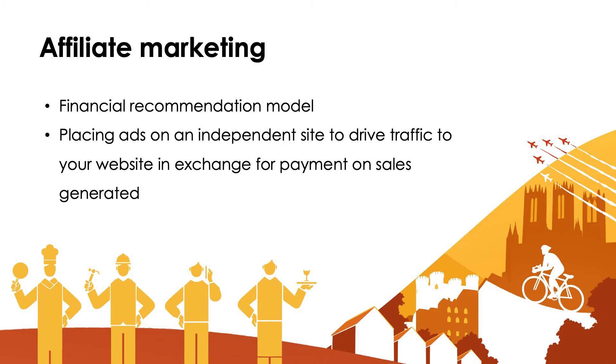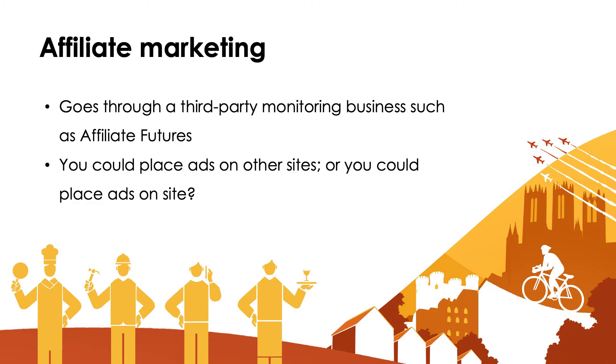Affiliate marketing is basically a financial recommendation model where you place your ads on an independent site that has a similar target audience to yourself, generally in exchange for payment on sales generated. This typically goes through a third-party monitoring service such as Affiliate Futures. You need to know specifics about your own target audience for this to work effectively. You could also consider placing ads on your own site if you have a particularly niche, high-traffic audience — it could be an alternative income stream.